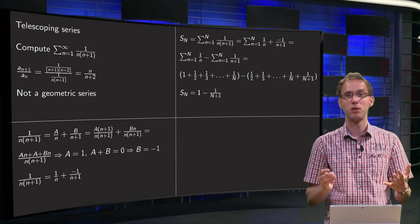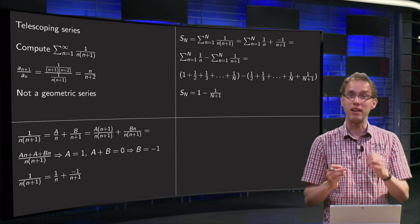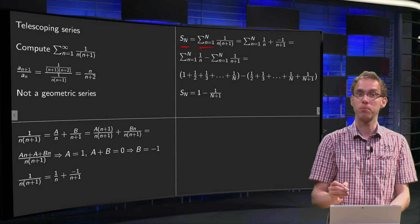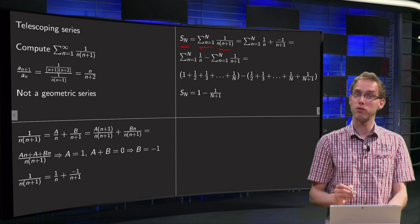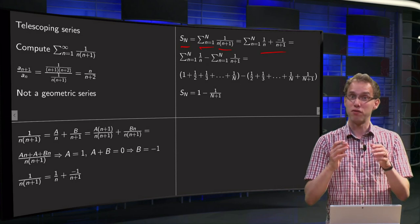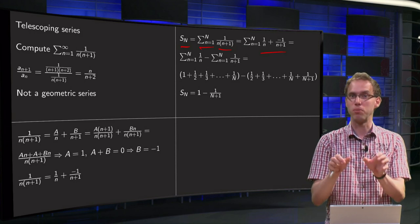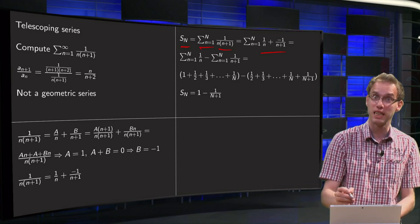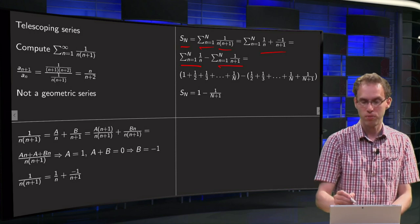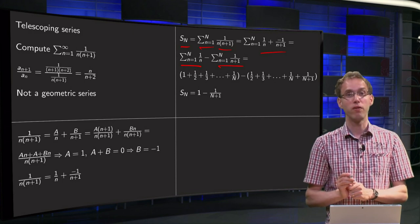How does it help us? Well, let's see what happens if we work out the capital Nth partial sum. So S capital N is the sum from small n from 1 to capital N, 1 over n times n plus 1. We can factorize that as we just saw, and since it is a finite sum, we can split the sum into two parts. So this is the sum from n from 1 to capital N of 1 over n, minus 1 over n plus 1.